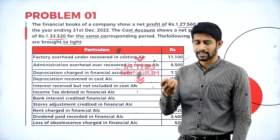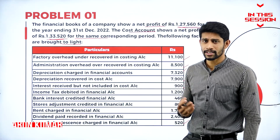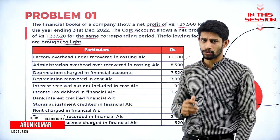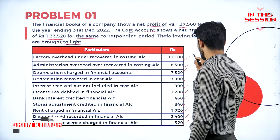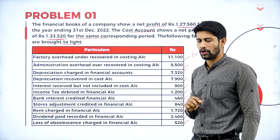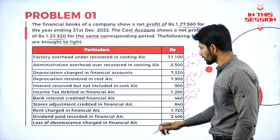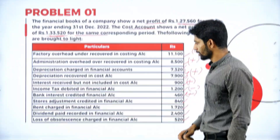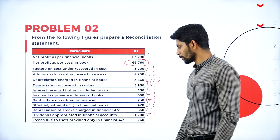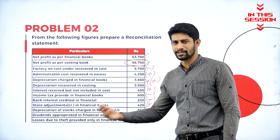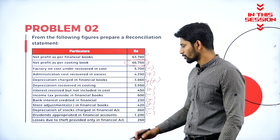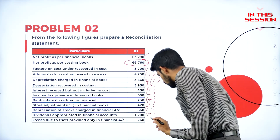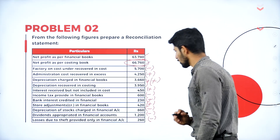They are supposed to collect 1,000 rupees but collected only 800. Still, they are supposed to collect 200 rupees. So what are we supposed to do? We are supposed to minus it from the cost profit. If any income is credited in the financial account, we are supposed to add it to the costing profit. Losses due to theft provided only in the financial account — theft is the amount going out, shown in the financial account but not in cost account. So we are supposed to minus it from cost profit.